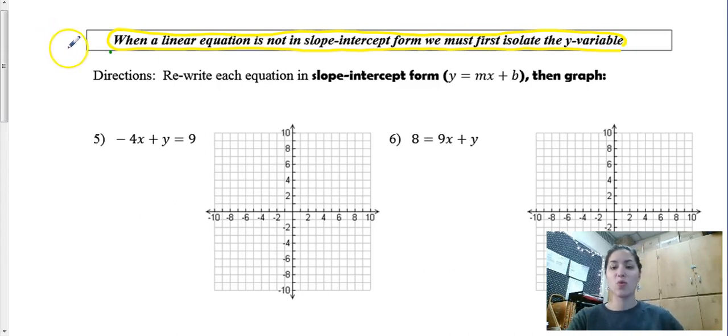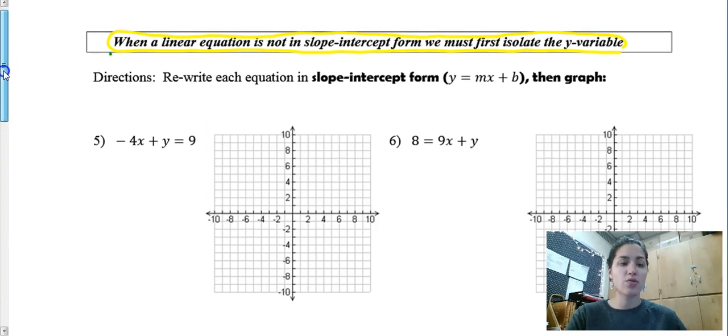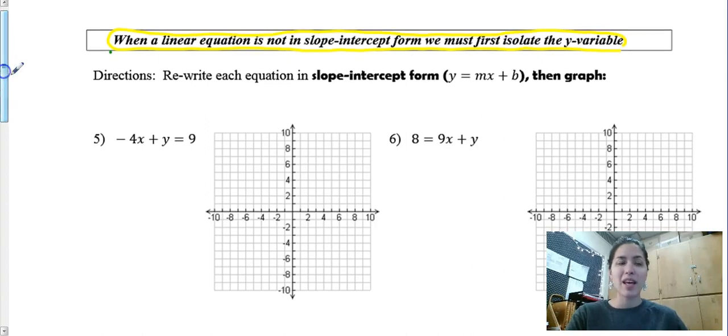It says when a linear equation is not in slope intercept form we must first isolate the y variable. So now we have some work to do because if I look at numbers five and six I do not see y equals mx plus b but that's okay because we have awesome solving skills in our toolbox. Now if in ninth grade you struggled with solving for y, 98% of the time it's because we weren't so good or careful at showing our work.